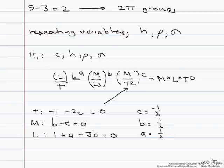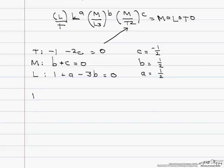our pi one is going to equal our first term, c, and now when we look at what a is, which is represented by h, we see that's to the positive one half. So that's the square root of h.